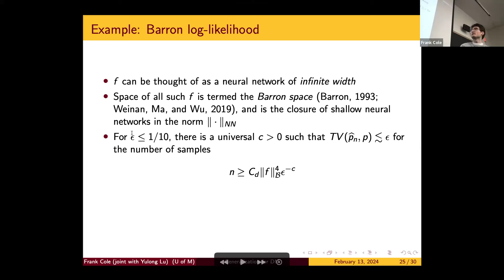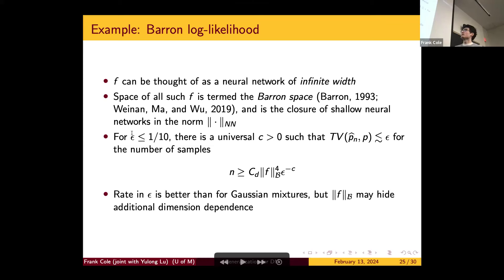In the setting where the log likelihood is a Barron function, we can say something stronger. We don't have that extra delta factor, and there's a better rate in epsilon than for the Gaussian mixture setting. This makes sense because this is a lower complexity distribution. There's still a trade-off in that you have a factor of the Barron norm, which can hide additional dependence on dimension, but it doesn't appear in the rate.